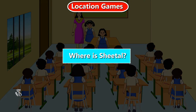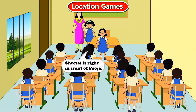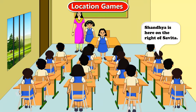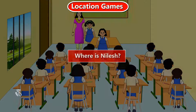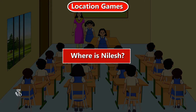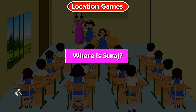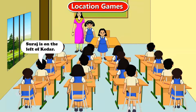Where is Sheetal? Sheetal is right in front of Pooja. Where is Sandhya? Sandhya is here on the right of Savita. Where is Nilesh? Nilesh is at the back on the last bench. Where is Suraj? Suraj is on the left of Kedar.